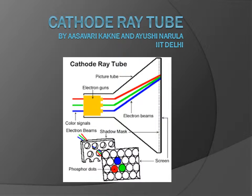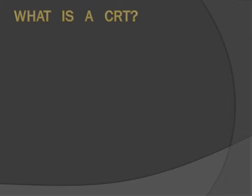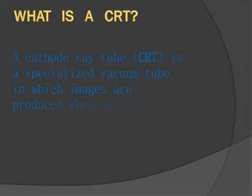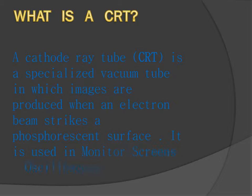Cathode Ray Tube, by Asavari Kakne and Ayushi Narula, IIT Delhi. What is CRT? A cathode ray tube is a specialized vacuum tube in which images are produced when an electron beam strikes a phosphorescent surface. It is used in monitor screens, oscilloscopes, etc.